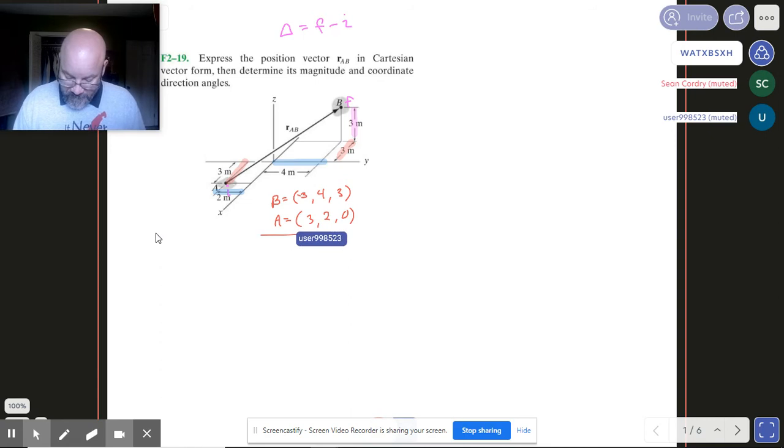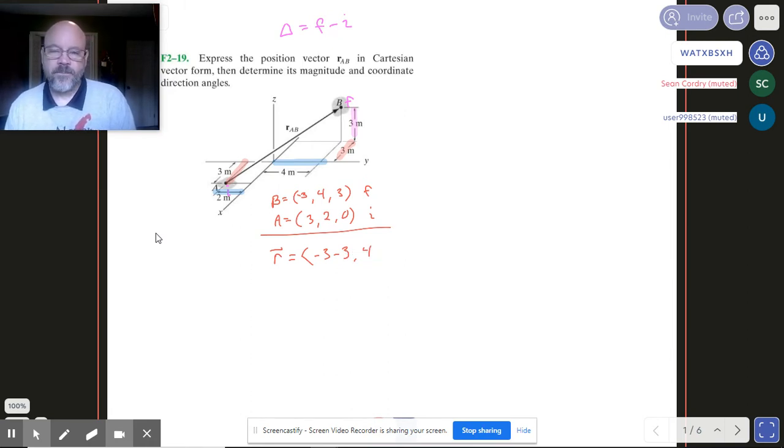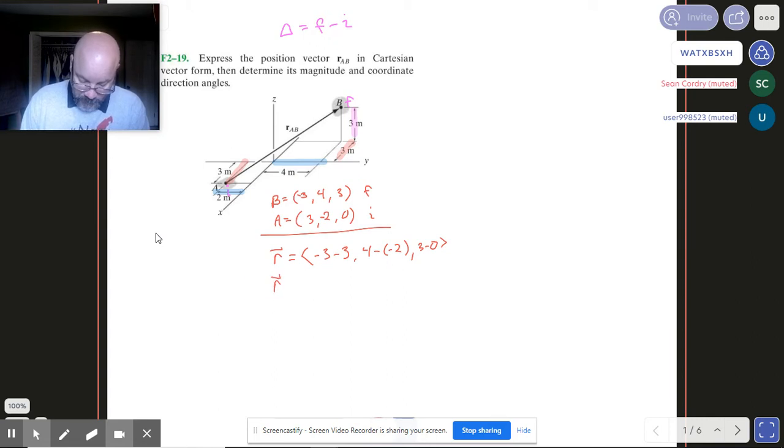Now, once we have those, everything's pretty straightforward because we want to do our delta. So this is our endpoint that's final. This is initial. And so all we really need to do here is go final minus initial. So I've got minus 3, minus 3, comma, 4. Oh, I screwed up with my Y also. Sorry about that. This guy is negative here. 4 minus a minus 2, comma, 3 minus 0. And so then our R, which is defined from A to B, we're looking at minus 6, 6, and 3.